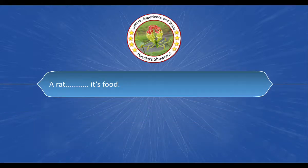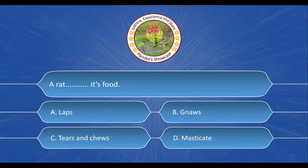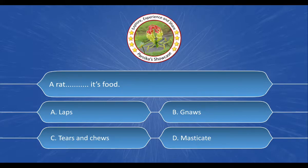Next question: A rat dash dash its food. The options are A. Laps, B. Gnaws, C. Tears and Chews, D. Masticate. And the correct answer is option B. Gnaws.